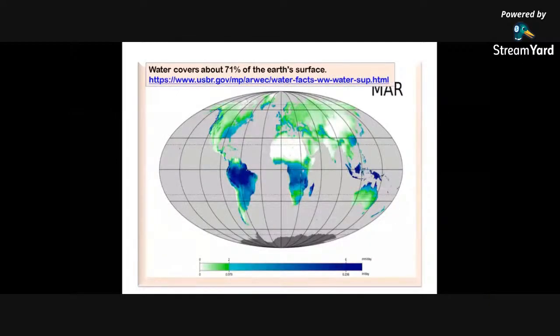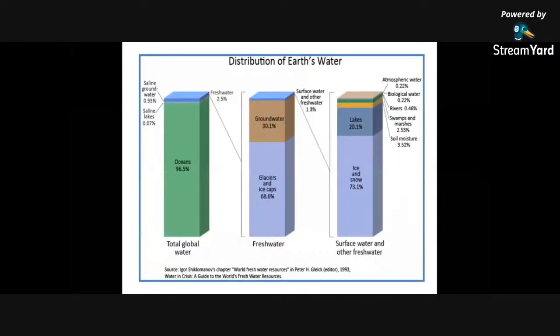Water covers about 71% of Earth's surface. It is found everywhere: above the Earth in the air and clouds, and on the Earth's surface in rivers, oceans, ice, plants, and in living organisms. This is the distribution of Earth's water, mainly from oceans, glaciers and ice caps, ice and snow, and we also have freshwater, surface water, atmospheric water, biological water, rivers, swamps and marshes, and soil moisture.